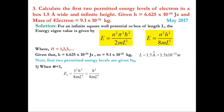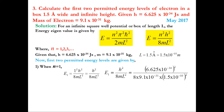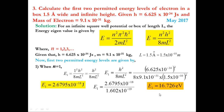For n = 1, E₁ = h²/(8mL²). Substituting the values of m, L, and h, we get E₁ = 2.6795×10⁻¹⁸ J. Converting to electron volts by dividing by 1.602×10⁻¹⁹ J, we get E₁ = 16.726 eV.